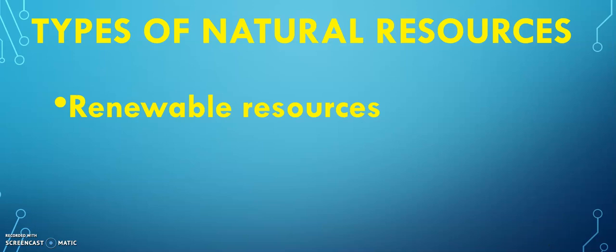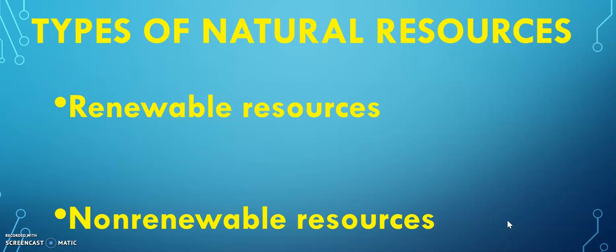The second type is non-renewable resources. When you say non-renewable resources, they cannot be replaced or replenished easily. Examples are soil, petroleum, coal, natural gas, and minerals — which could be metallic or non-metallic. It takes thousands or millions of years for them to be replenished. Soil comes from rocks and takes thousands of years to form. For fossil fuels like coal, natural gas, and petroleum, it takes millions of years for dead plants and animals to turn into fossil fuels.